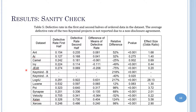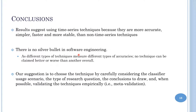One reason why work forward outperformed the other techniques is that the other techniques took advantage of future knowledge. We divided the dataset into a first half and a second half and checked whether there was a difference in the proportion of buggy classes. Results show a large difference across all 15 projects — for example, in Ant the relative difference is 52%, with a defect rate of 50% in the first half versus 23% in the second half. Our conclusion is to suggest using time series techniques because they are more accurate, simpler, faster, and more stable than non-time series techniques.